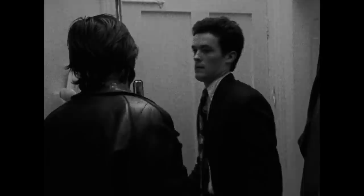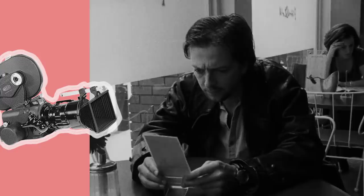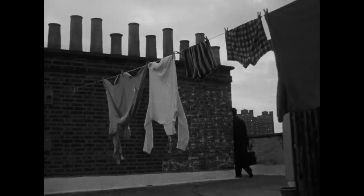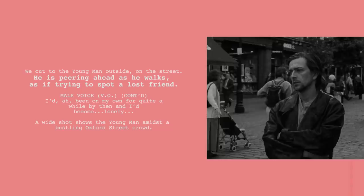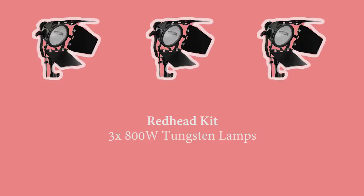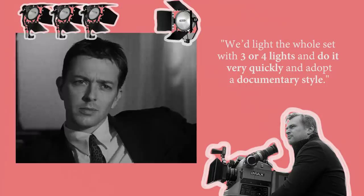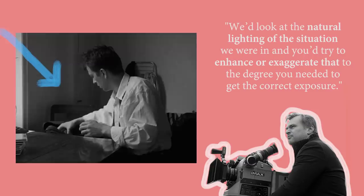Due to the limited film stock they could buy, Nolan adopted an approach of thoroughly rehearsing with actors and getting the performances where he wanted them, before rolling on only a take or two with precious film. This perceived limitation can often be a blessing for young directors, as it forces them to have a clear idea of exactly what they need from each scene. The lights on the shoot were limited to a kit of three redheads — 800 watt tungsten lights — and sometimes a blonde, a more powerful 2000 watt lamp. They'd light the whole set with three or four lights very quickly and adopt a documentary style, looking at the natural lighting of the situation and enhancing or exaggerating it to get the correct exposure.